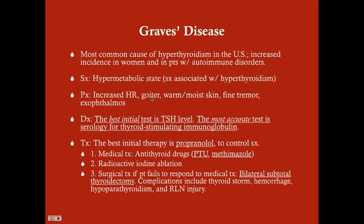Other signs include goiter, warm moist skin, and fine tremor. The best initial diagnostic step when suspecting Graves' disease is a TSH level—not thyroid hormone directly. When the thyroid is stimulated by something other than TSH, there will be negative feedback to the anterior pituitary, reducing TSH. So with hyperthyroid symptoms and a low TSH, something other than TSH is driving thyroid activity. T3 and T4 will be elevated. Distinguishing primary hyperthyroidism—from the thyroid itself, with low TSH and high T3/T4—from secondary hyperthyroidism—driven by elevated TSH—is important.